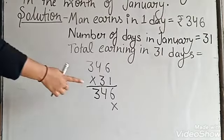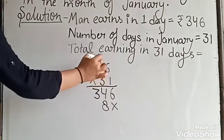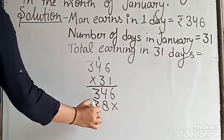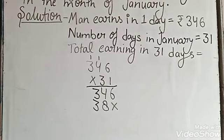3 times 6 is 18, write 8 and carry 1. 3 times 4 is 12, plus carry 1 equals 13, write 3 and carry 1. 3 times 3 is 9, plus carry 1 equals 10.